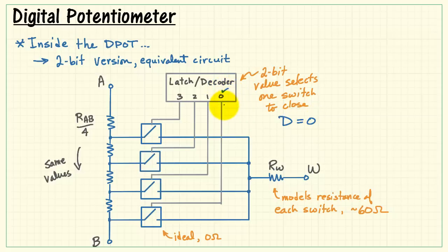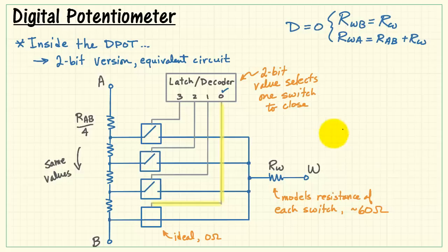I'll show you an example. Supposing the digital value was zero, that would select or decode to this line right here. When that's active, the switch is closed, and we see a path going from B to W with no resistance except that wiper resistance, Rw. Going from A to W, we see the entire chain of resistors plus the wiper resistance, Rw. So one is small and one is large.